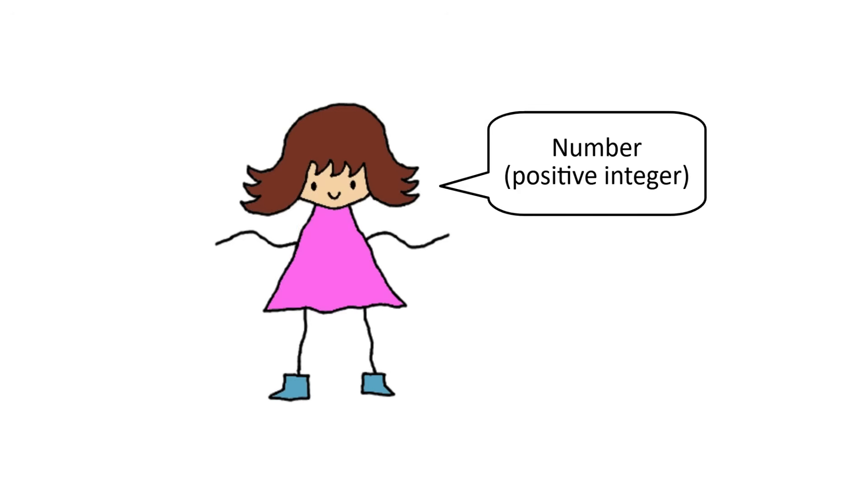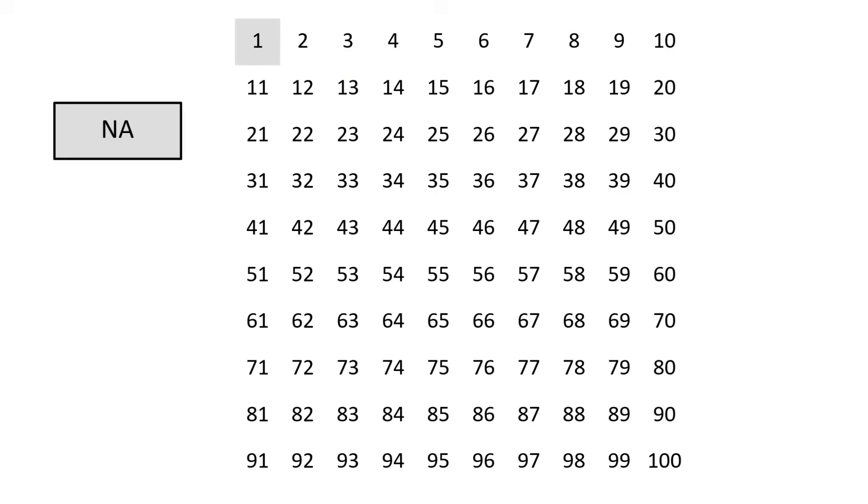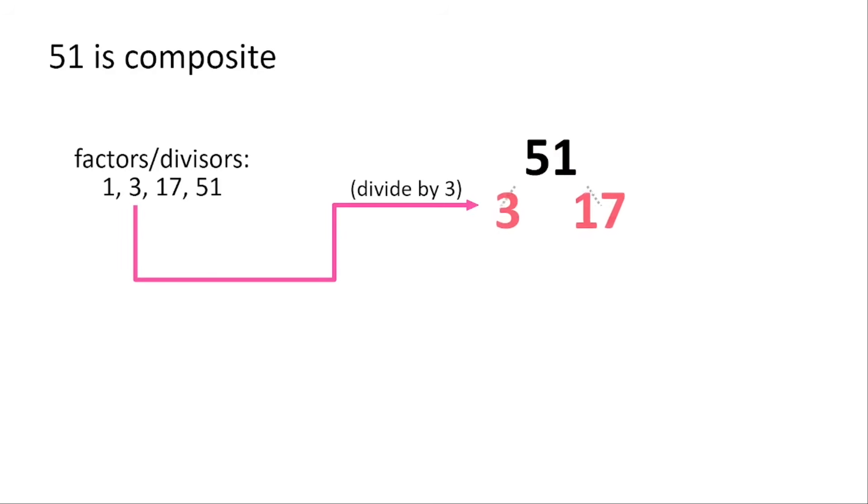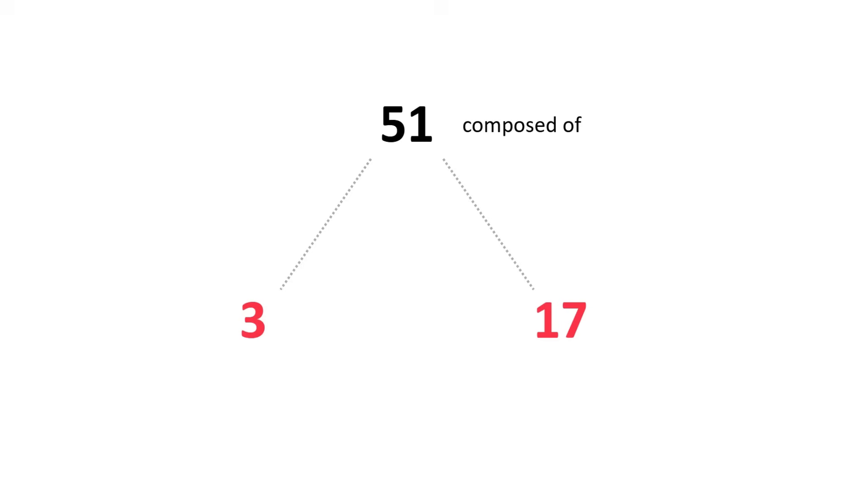The first thing to know about a number is whether it's prime. Other than one, which is considered its own thing, every number is prime or composite. With a composite number, you can divide it by one of its factors, aka divisors, to break it into smaller pieces. But a prime number doesn't have any factors other than one or itself, neither of which really break it up, so all you can do is repeatedly divide by one. In this sense, composites are composed of other numbers and primes are indivisible.